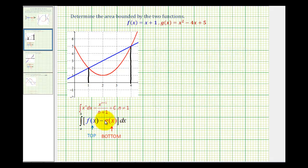The reason this works is if we determine the area under the top function and then subtract out the area under the bottom function, you can see we'd be left with this blue region here which would be the area of the bounded region.